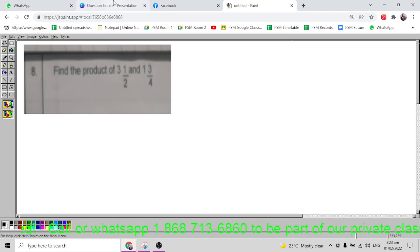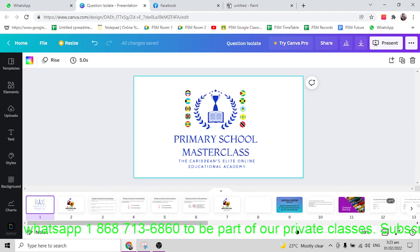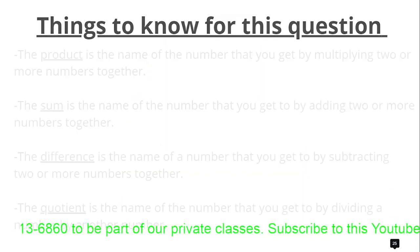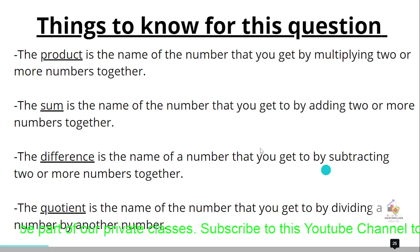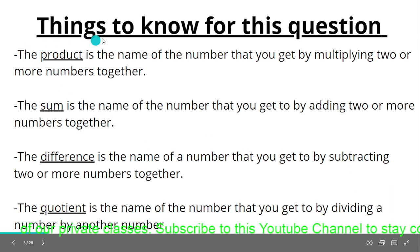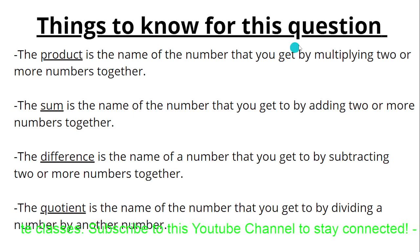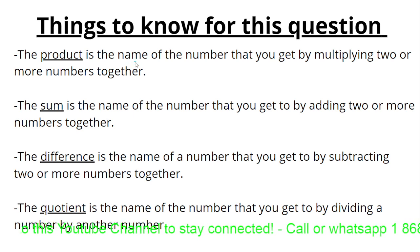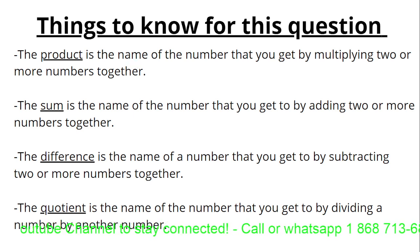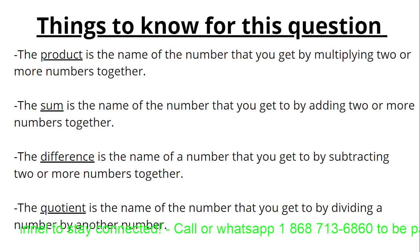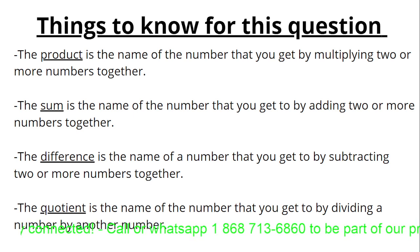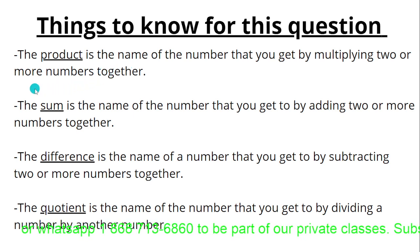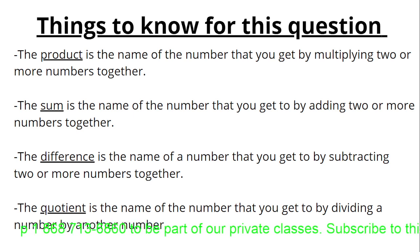I've prepared a couple of things for this question — things you need to know. The product is the name of the number that you get by multiplying two or more numbers together. So that question asks for the product, which means you're going to need to multiply those fractions.